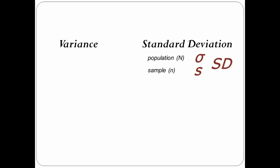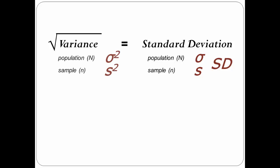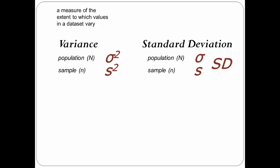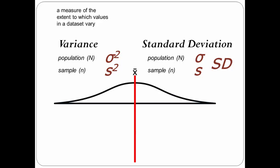Here's the connection between the two: standard deviation is the square root of variance. So the symbol for variance is the same symbol as standard deviation, but squared. Variance describes the extent to which values in a dataset vary — it measures how far a set of numbers is spread out in relation to the mean. The larger the variance statistic, the more spread out the data are. The smaller the variance statistic, the more the scores are clustered around the mean. A variance of zero means all the scores in a dataset are the same — they are the mean.